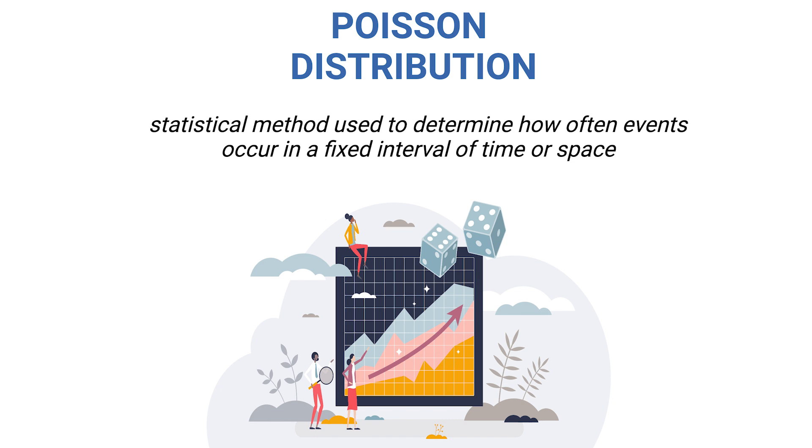Though it might sound complex, the Poisson distribution helps predict seemingly random events, like how often you might hear your favourite song on the radio, or in our case, how a virus spreads across cell cultures.